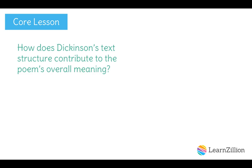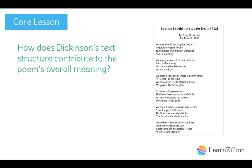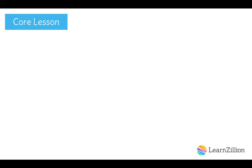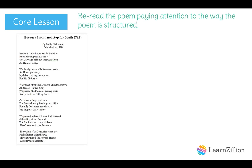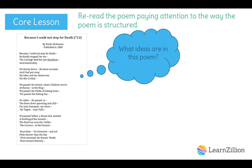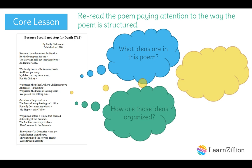So, how does Dickinson's text structure contribute to the poem's overall meaning? Let's look back at the poem in general, eventually focusing on stanzas 3 and 5. As we re-read the poem, we need to pay attention to the way it is structured — thinking about the ideas in the poem, how those ideas are organized, and also whether the poem has a certain appearance or tone.